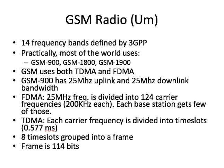When we talk about the interface between the radio and the base station, we're usually talking about the Um interface — this is the GSM radio interface. There are 14 different frequency bands defined by the 3GPP. Practically, most of the world uses one of three different frequency bands: either GSM-900, GSM-1800, or GSM-1900. GSM is a technology that uses both TDMA and FDMA technologies for multiplexing. TDMA is a time division multiplexing algorithm, whereas FDMA is a frequency division multiplexing algorithm.